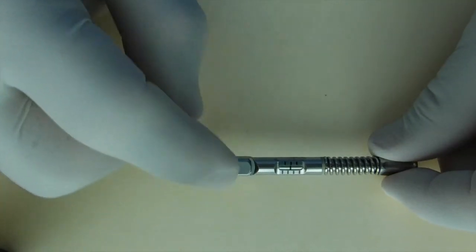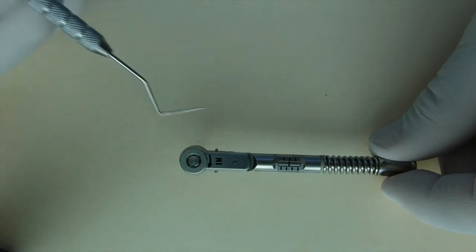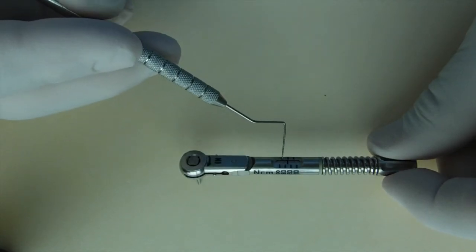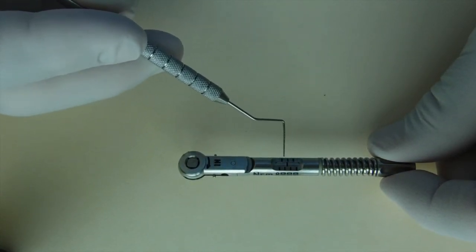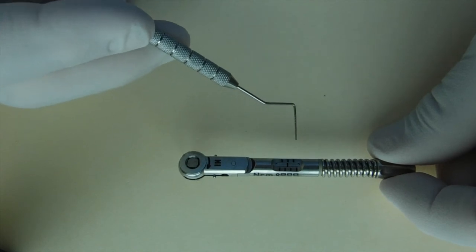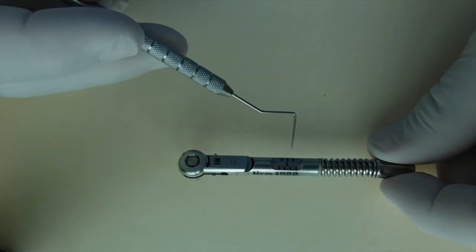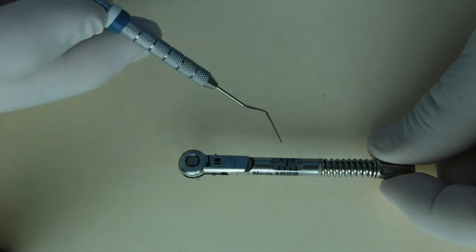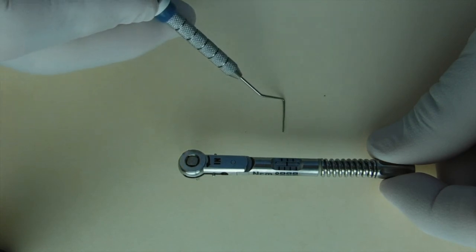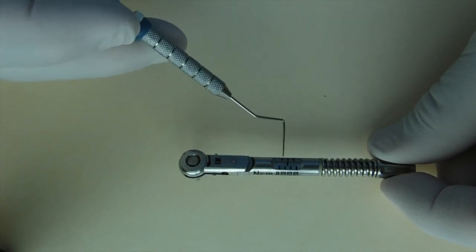It's very important that you verify that the torque wrench is set for the desired value of torque that you intend to use it for. Never assume that the person that used this prior to you has left it where you may intend to use it. It's very important.